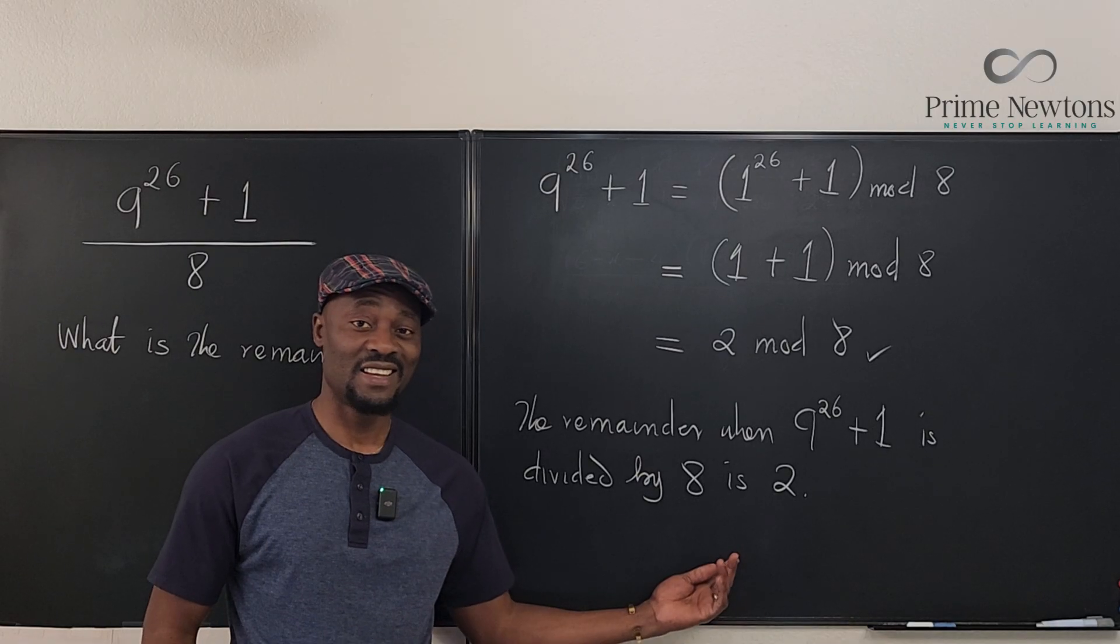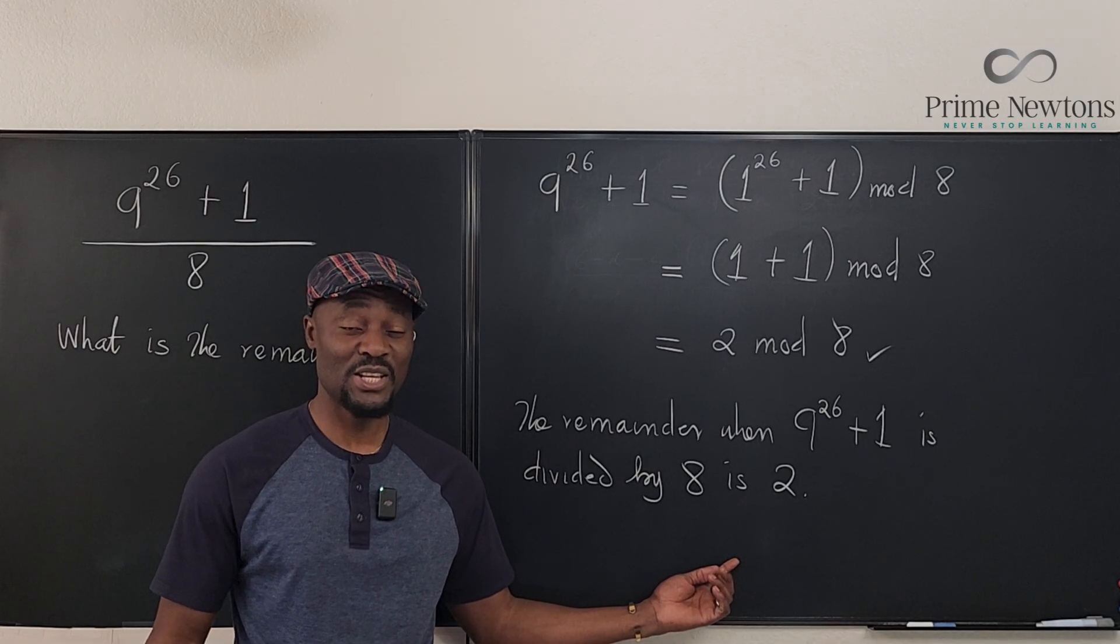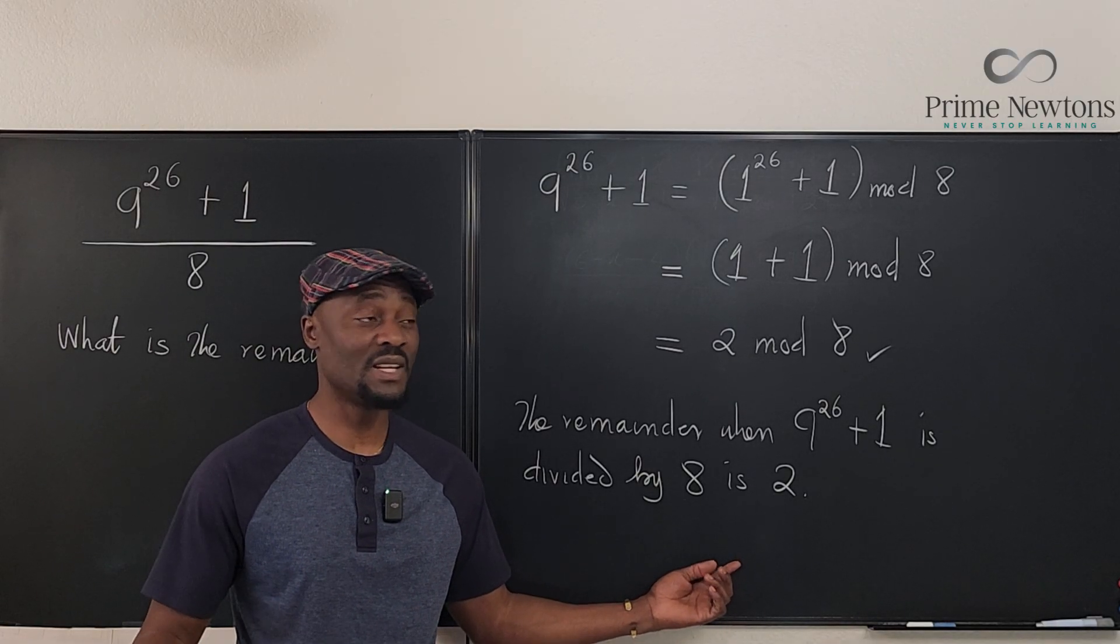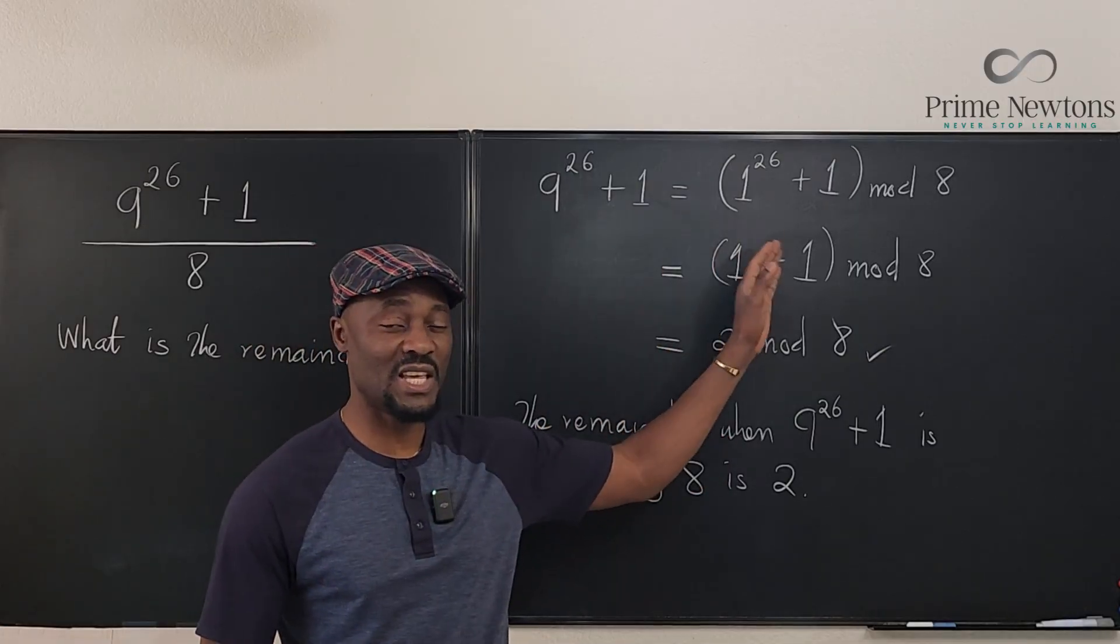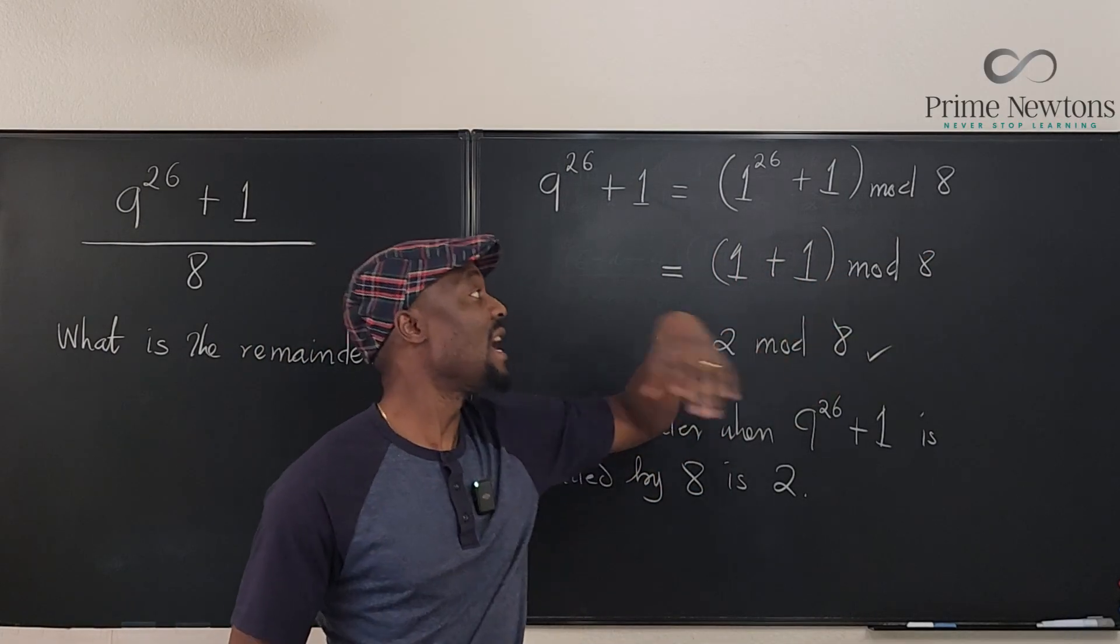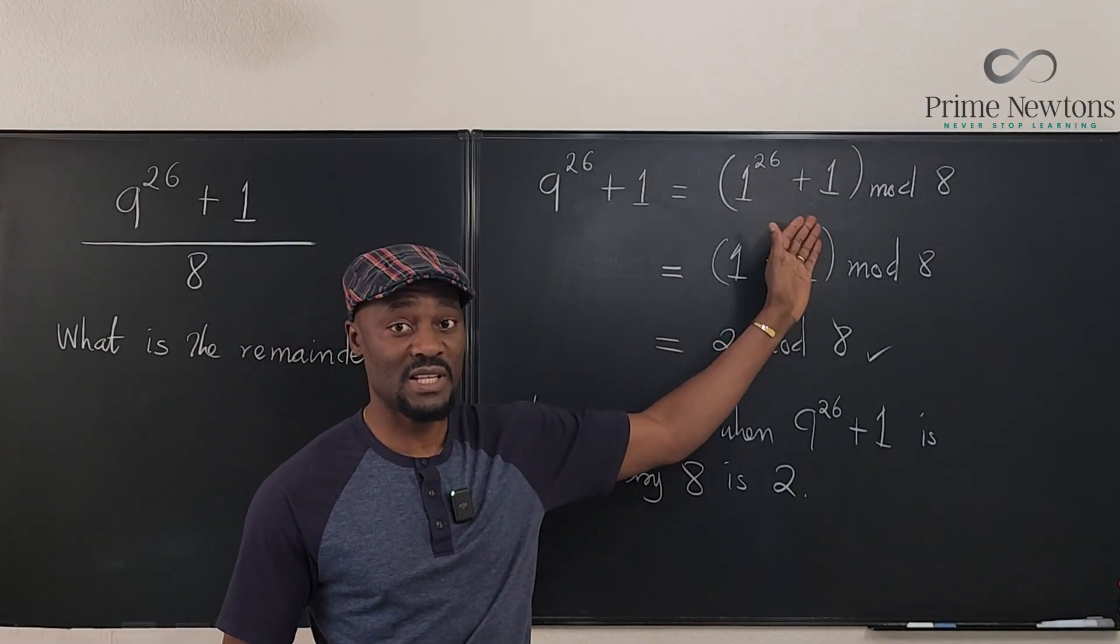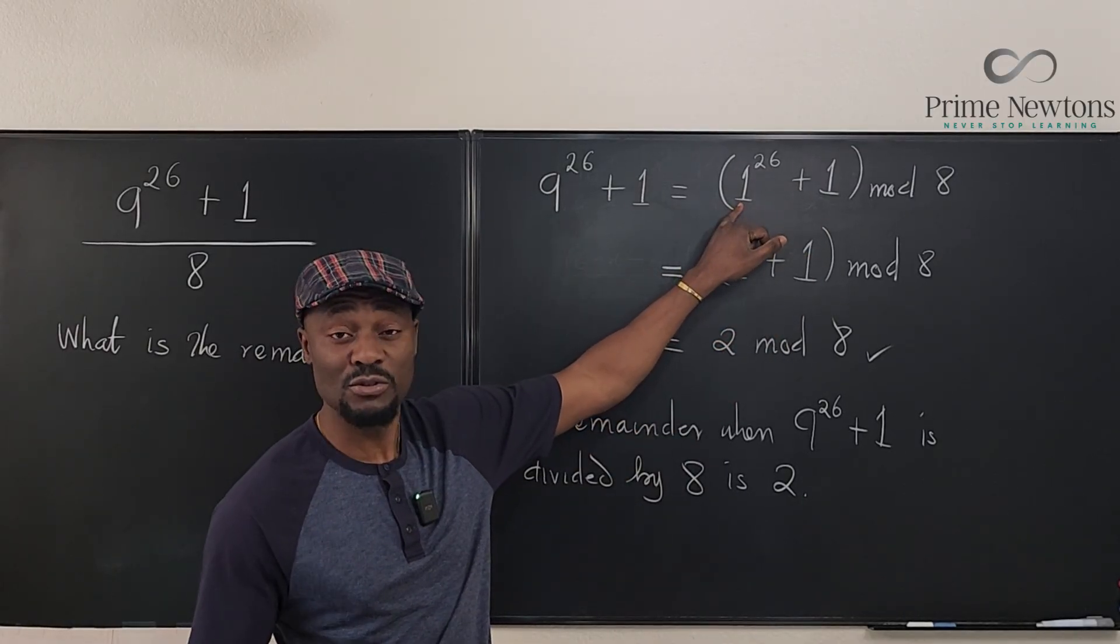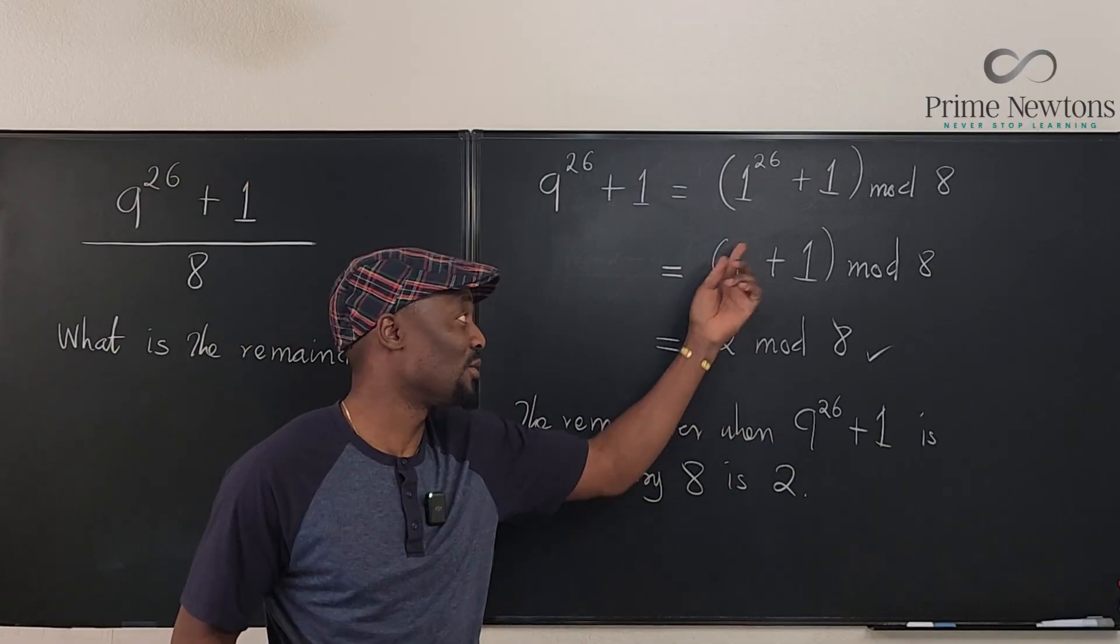Like I said, it's a very easy problem. It doesn't matter how the problem is written, just treat it this way. Write every number you see in the expression mod 8 if you're dividing by 8, and then simplify whatever is in.